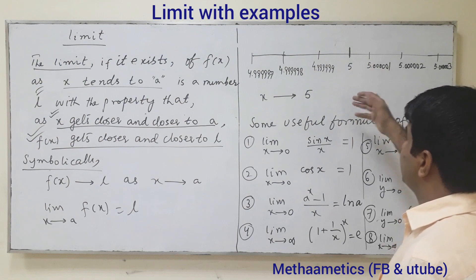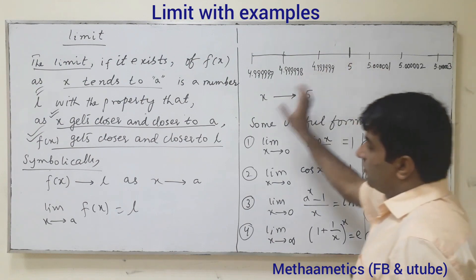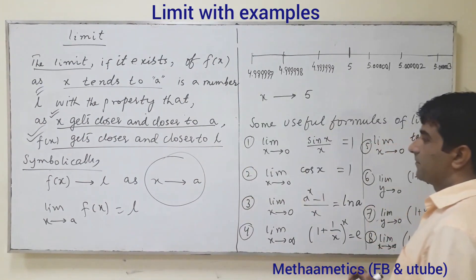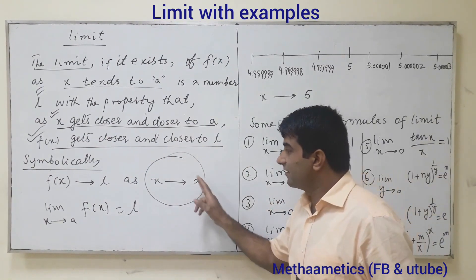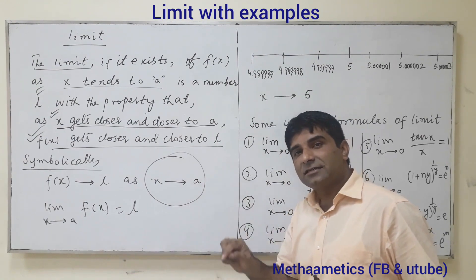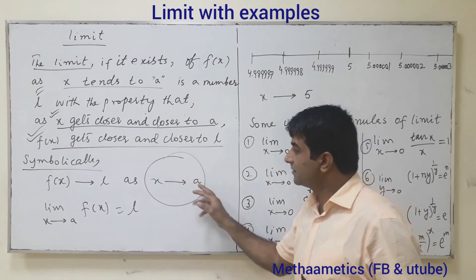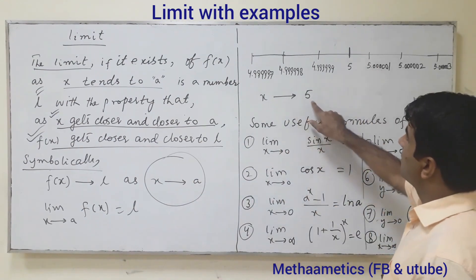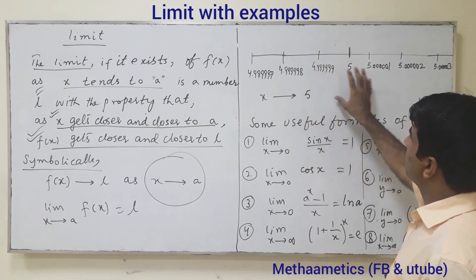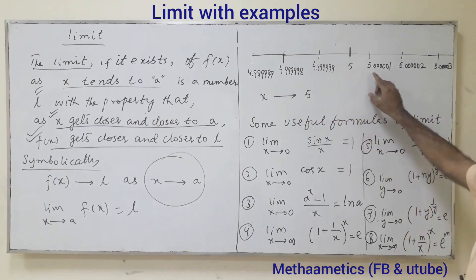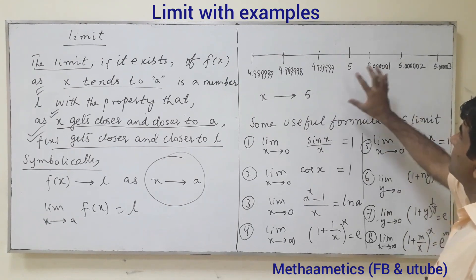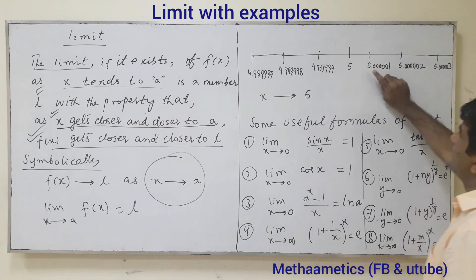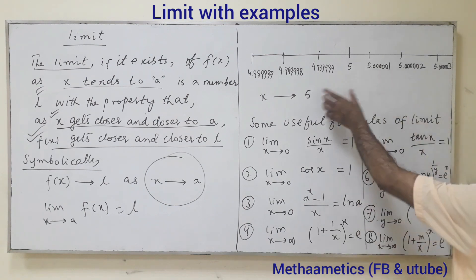Let's see this with some examples. What does it mean when x approaches 'a'? x approaches 'a' doesn't mean that the value of x is exactly 'a'. Its meaning is that the value of x approaches a number. Suppose this number is 5 — x tends to 5. This means the value of x is not exactly 5.